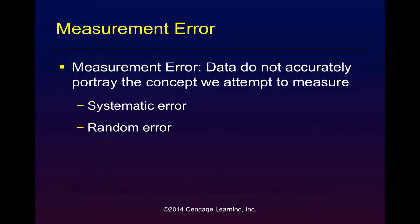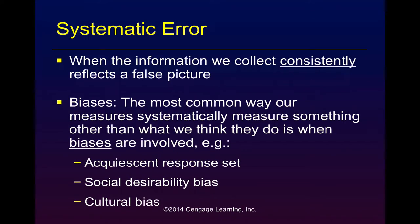Quite often, systematic errors result from the ways in which we introduce bias into the research process. Systematic error, as its name implies, means the information we collect consistently falsely represents the phenomenon that we are studying. Consistently is the operative word here.